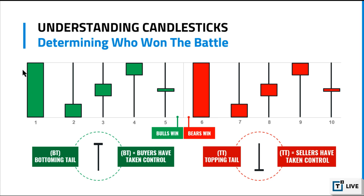In the first example, the bears were nowhere to be found. The stock opened here, closed up at the highs — all out bullish — but they weren't battle-tested. Maybe there are no bears at all, or maybe they just didn't show up yet. Number one is bullish, but number four is even more bullish because the stock closed at the absolute high with a bottoming tail, meaning the bulls were actually tested, the bears showed up, and the bulls still crushed them. So those are the two most bullish candles.